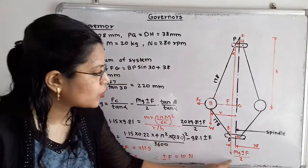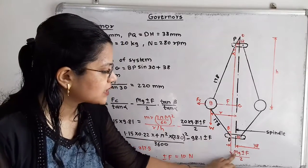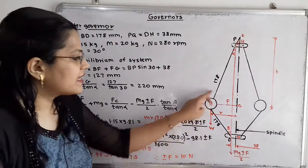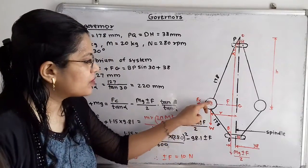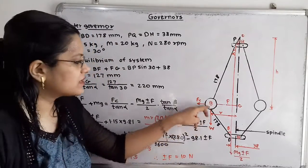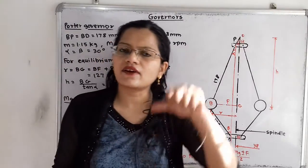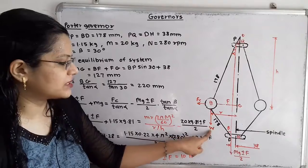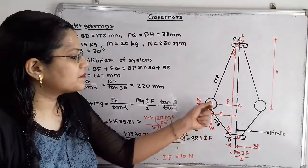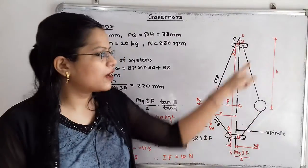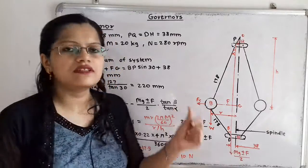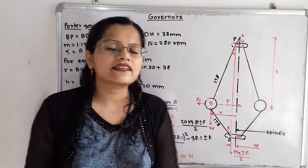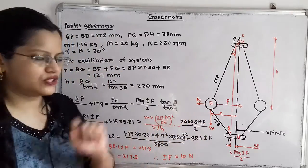Because of this, the total vertical force at the sleeve is shown as Mg plus or minus F divided by 2, depending on whether speed is increasing or decreasing. For the fly ball, the weight W acts vertically downward through the center of the fly ball, and since the fly balls rotate about the spindle axis, the centrifugal force Fc acts in the radially outward direction.